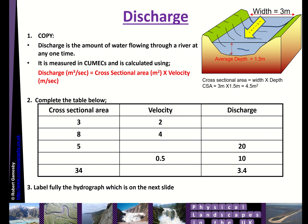The next thing we need to know is the velocity. Here I've indicated the velocity is two meters per second. For discharge, we use this formula: cross-sectional area in meters squared multiplied by the velocity in meters per second. So discharge equals four point five meters squared times two meters per second, giving us a discharge of nine meters cubed per second. Your first exercise is to have a go at working out these calculations using this formula.